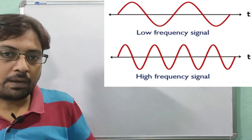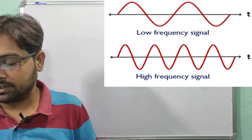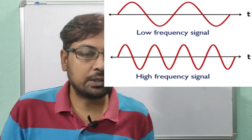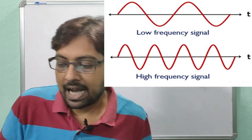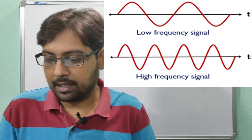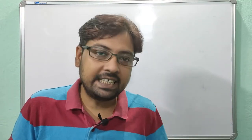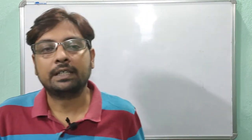As shown in the figure, figure one shows a low frequency signal because the number of cycles is low. Figure two shows a high frequency signal — the number of cycles is more. In India, 50 cycles pass in one second, so India uses 50 Hertz frequency.